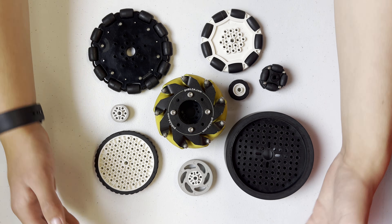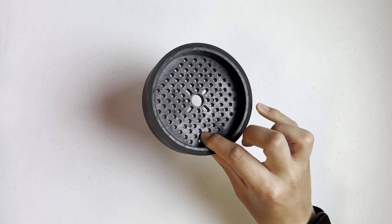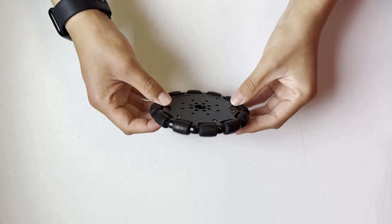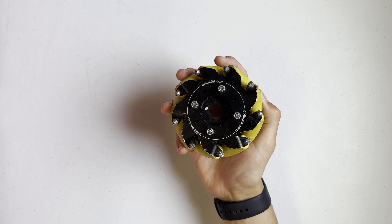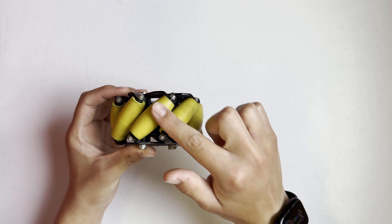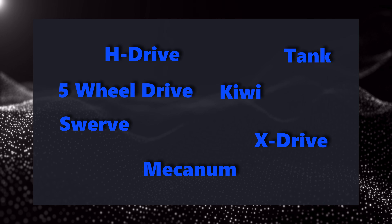Now, without further ado, let's get into it. Before we get too far into this, we should talk about the most basic part of a good drivetrain: wheels. FTC robots typically use one of three different types of wheels. Traction wheels have good, well, traction — they're the wheels you're accustomed to seeing on things like cars. Omni wheels have rollers around their circumference that roll freely perpendicular to the powered wheel, allowing them to apply power forwards but have little resistance when moving laterally. Finally, mecanum wheels are a specialized type of omni wheels with their rollers at 45 degrees instead of 90.